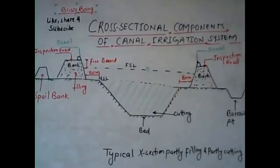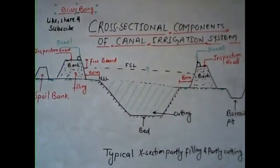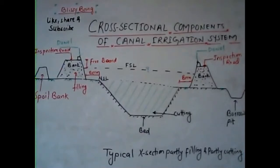The service road is provided for the inspection purpose of the canal. On this service road, a dowel or dowla is also provided as a measure of safety while driving through the inspection road.